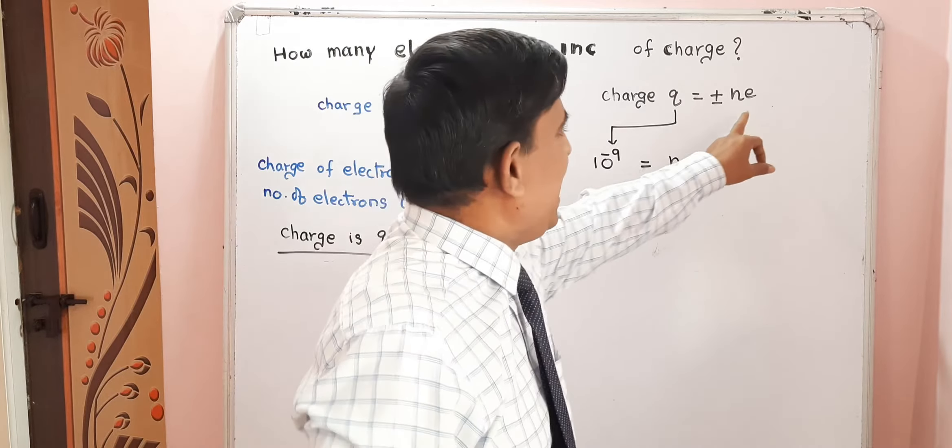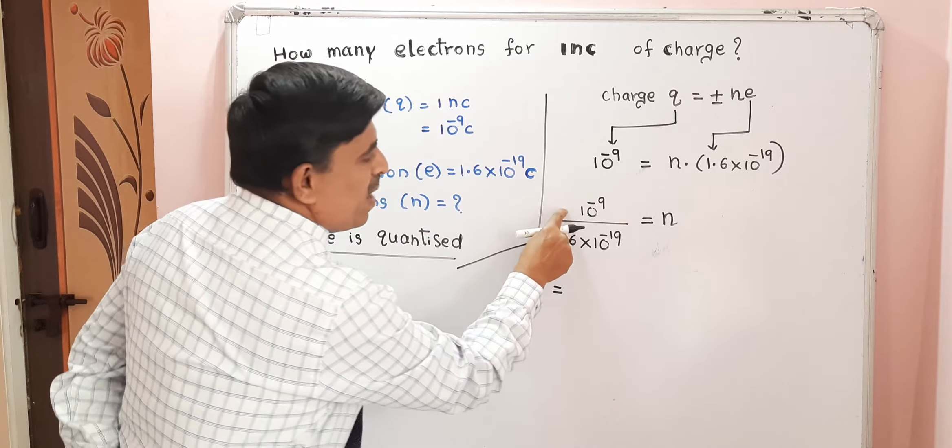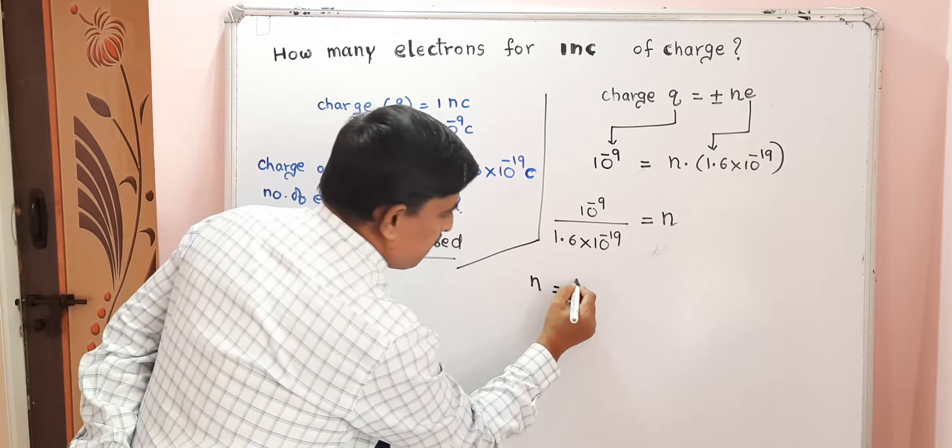Now, rearranging the equation, N equals Q divided by E. So 10 power minus 9 comes to the numerator, and 1.6 into 10 power minus 19 comes to the denominator. Since 10 power minus 19 is in the denominator, it becomes 10 power plus 19 in the numerator.